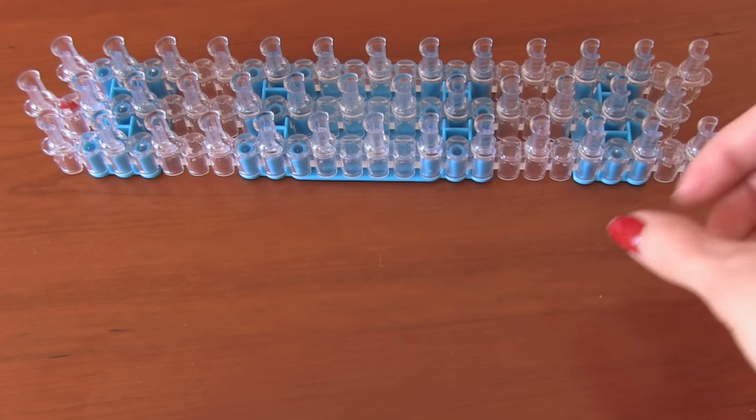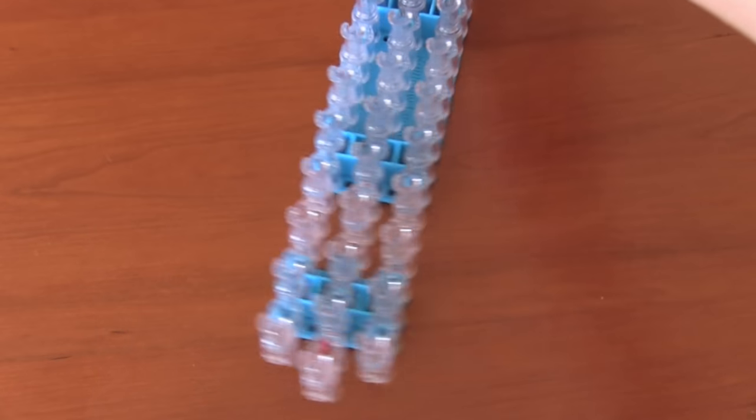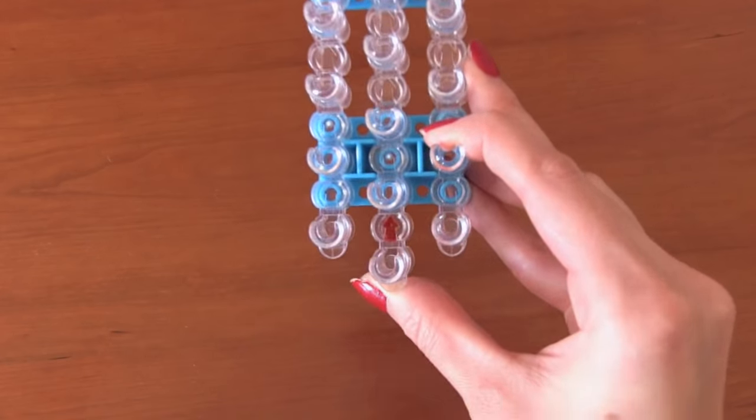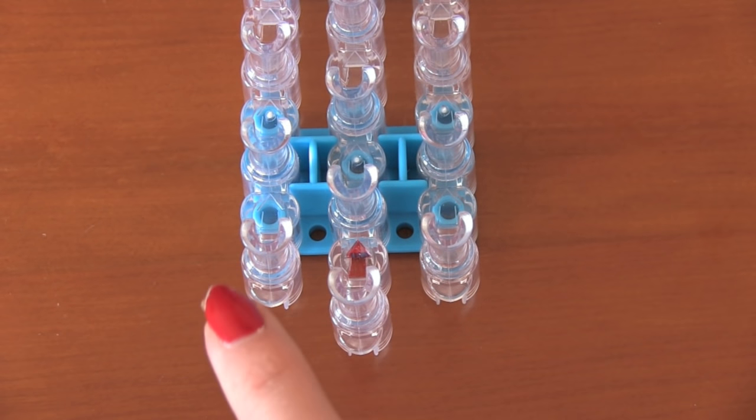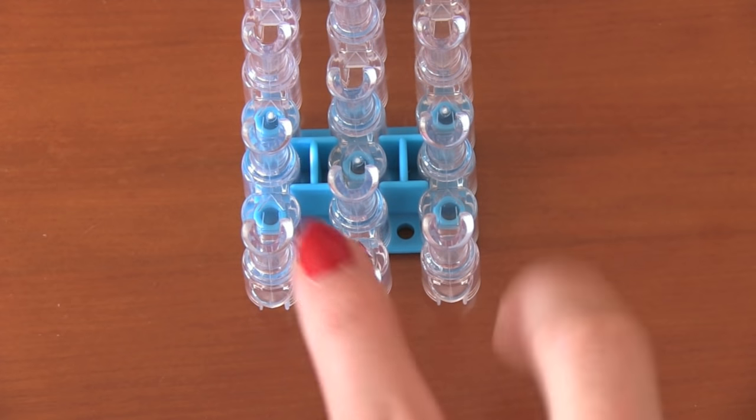To begin, I'm going to take my loom and spin it so the arrow is facing away from me. You want to make sure that the pegs are staggered so the middle peg is further down than the side too.